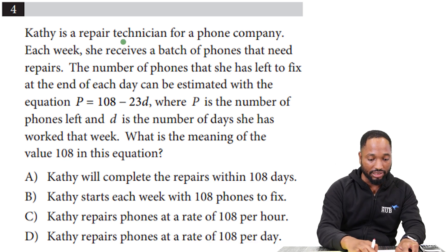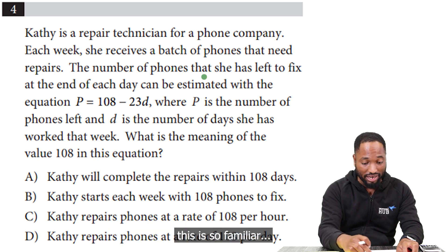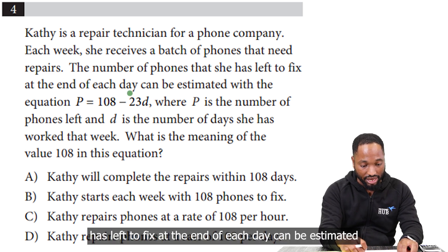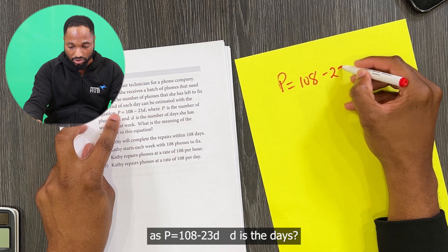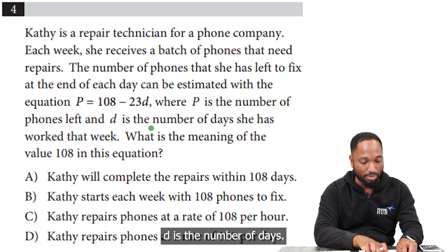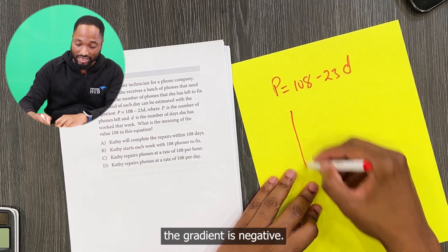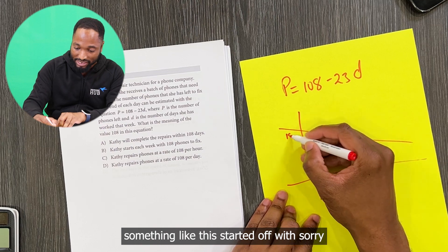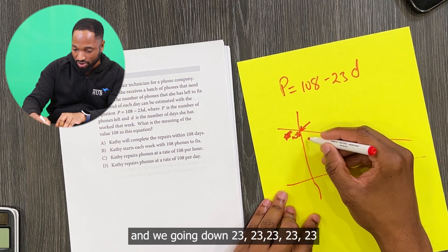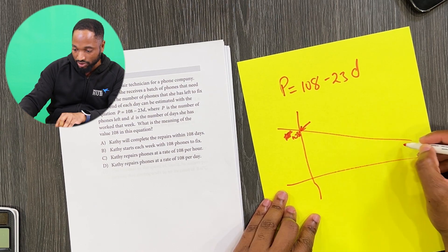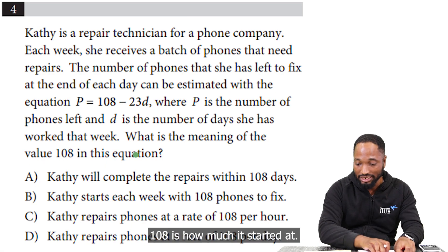Next question. Katie is a repair technician for a phone company. Each week she receives a batch of phone repairs. The number of phones she has left to fix at the end of each day can be estimated as p = 108 − 23d, where d is the number of days and p is the number of phones. 108 is how much she started with. The gradient is negative, so she's going down by 23 phones each day.